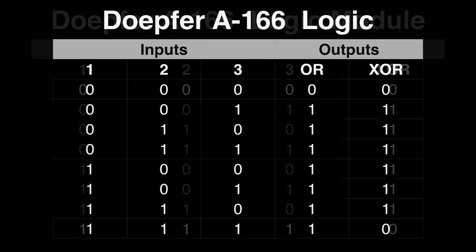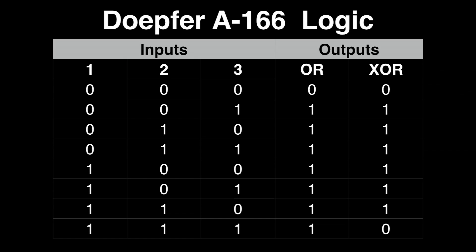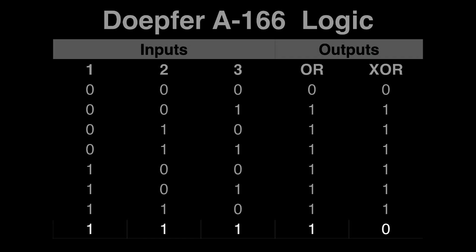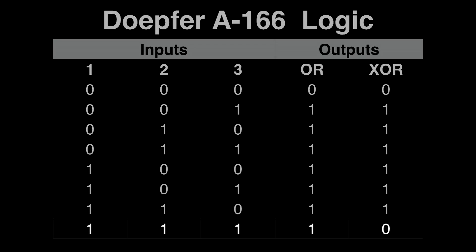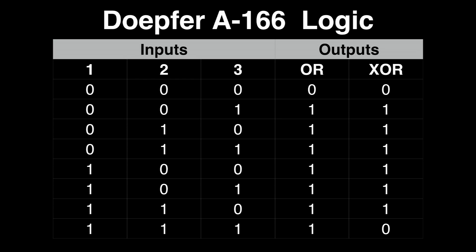Let's see the values together for both OR and XOR. From this you can see that the values at the outputs are identical, except for the case when all inputs are high. If you're new to this, you may need to go over the truth table a few times, or experiment with a few basic patches to get a feel for it. I myself had to read through this material several times before it really sunk in.